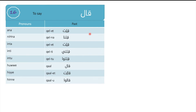Now if you conjugate it: ana illet (I said), nihna illna (we said), enta illet (you, masculine), enti illeti (you, feminine), entu illtu (you, plural), huwe al (he said), hiye alet (she said), and henne alu (they said).